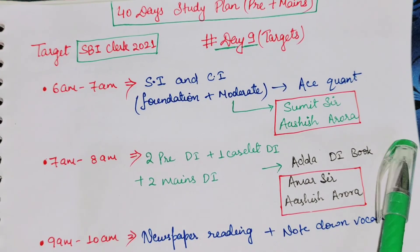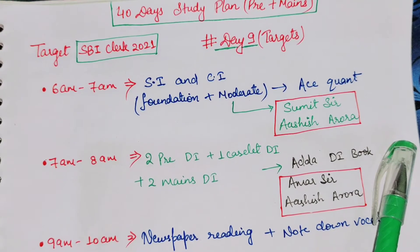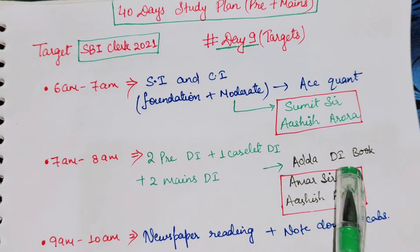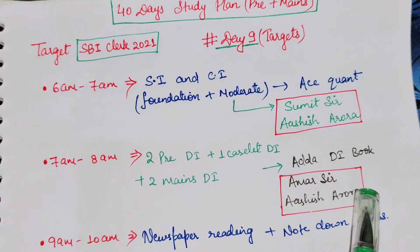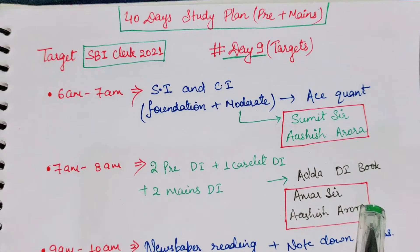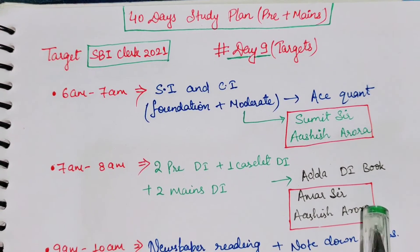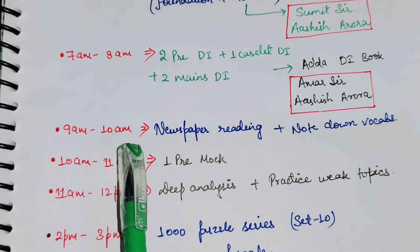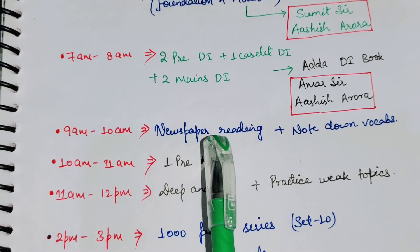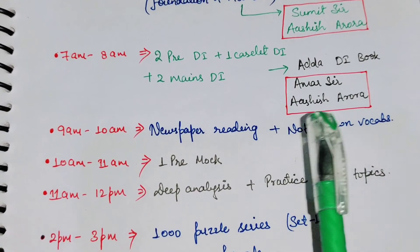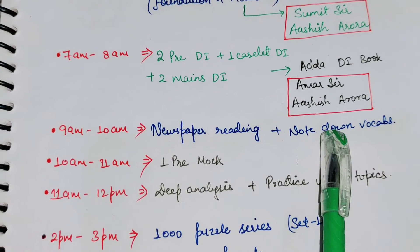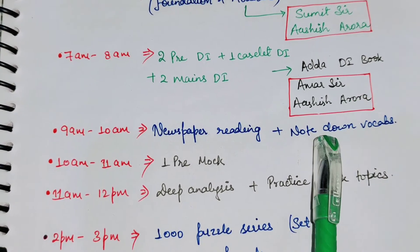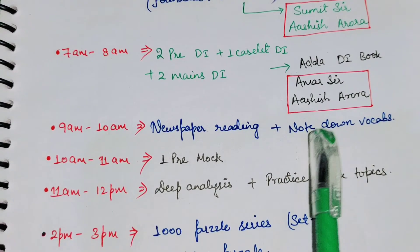You have to do this from the Adda DI book. Then from 9 AM to 10 AM, you have to do newspaper reading, and you have to note down vocabulary and make sentences from that vocabulary.